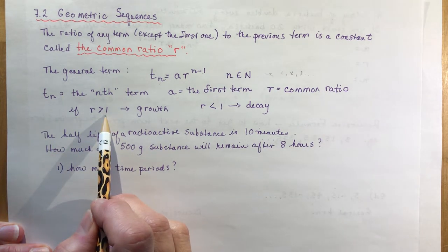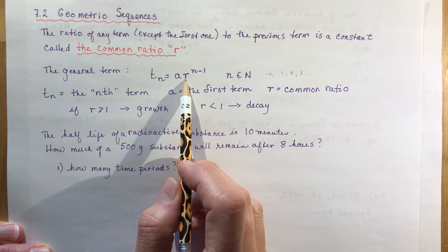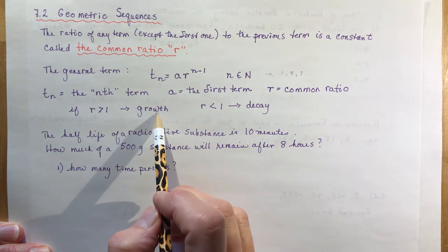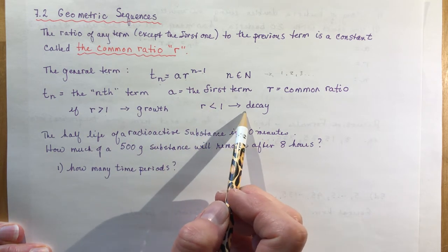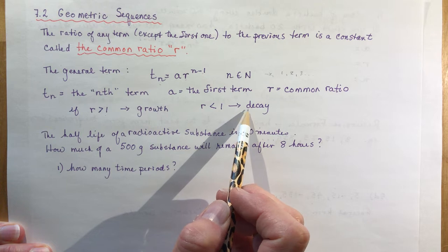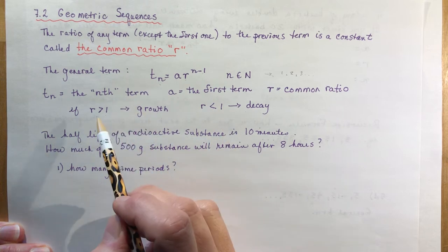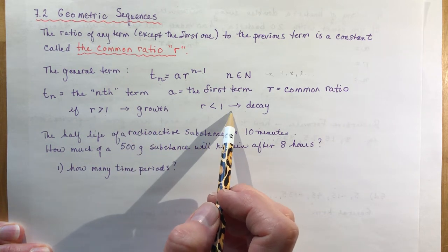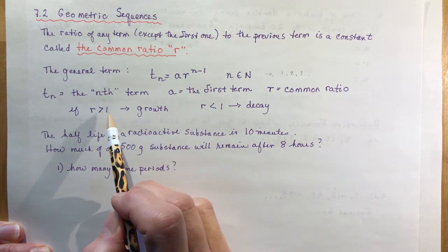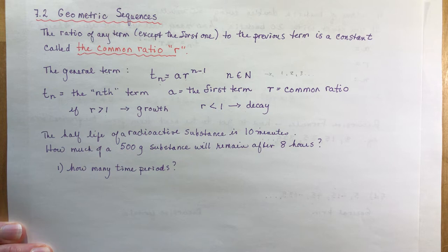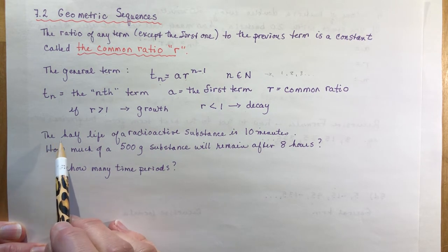If r is greater than one — so if you're multiplying by a number like 2, 3, 4, 5 — you're going to get growth. But if the ratio is less than one, you have decay. You probably remember from exponentials where growth and decay appeared: decay was a fraction like a half-life, and growth was like a doubling time.